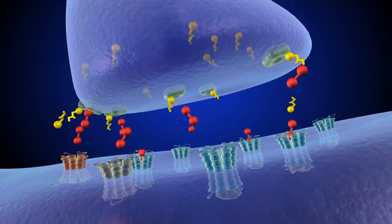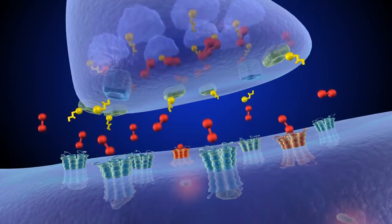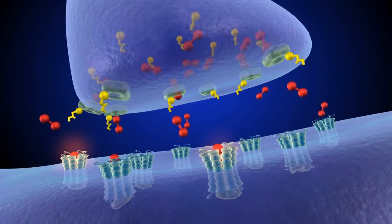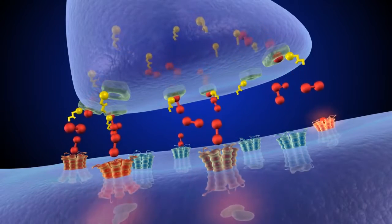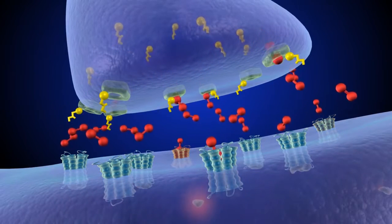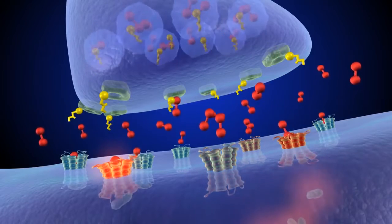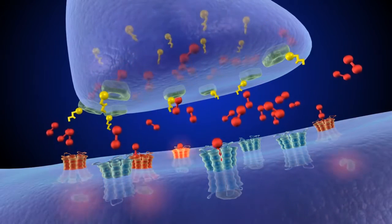But unlike cocaine, higher doses of meth can increase the release of dopamine from the cell, leading to much more dopamine in the synapse, where it becomes trapped because meth prevents the transporters from removing it.